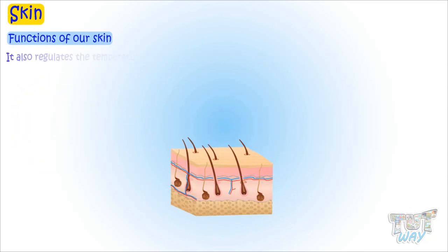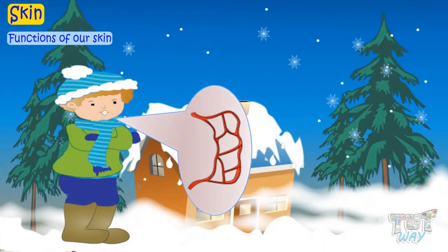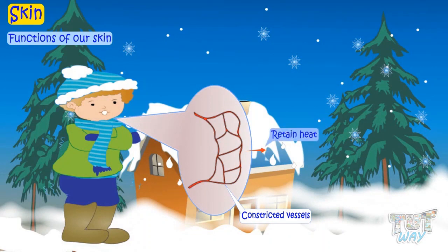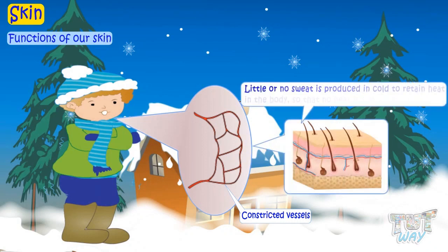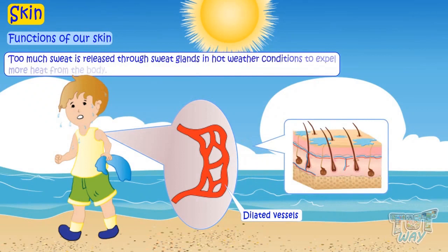Skin also regulates the temperature of our body. The blood vessels in the skin constrict in very cold conditions to retain heat in the body. Also, less or no sweat is produced in cold weather, so that no heat is lost. Blood vessels dilate or expand in hot weather conditions to allow more heat to escape from the body, and too much sweat is released through sweat glands in hot weather to let more heat escape.